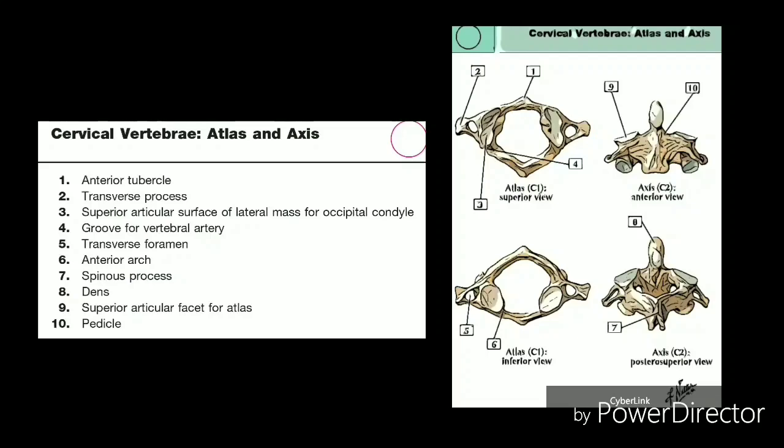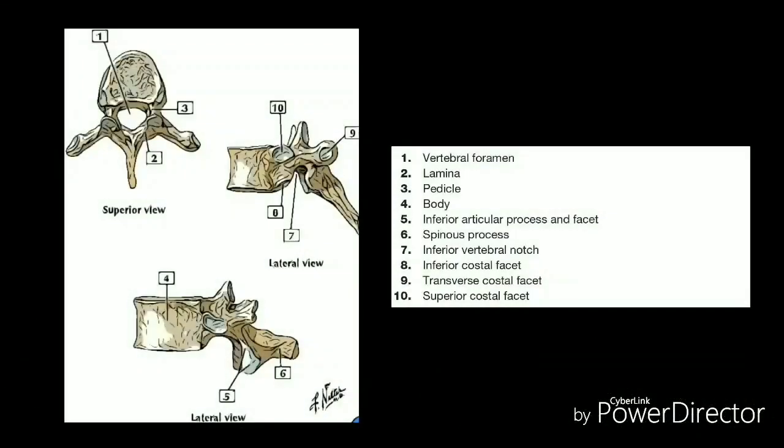The axis has a projection called the odontoid that the atlas pivots around. This joint allows for the side-to-side or no motion of the head. The thoracic mid-back's main function is to hold the rib cage and protect the heart and lungs.